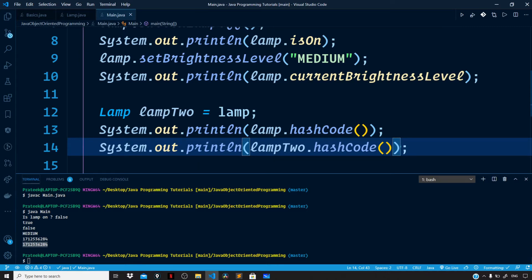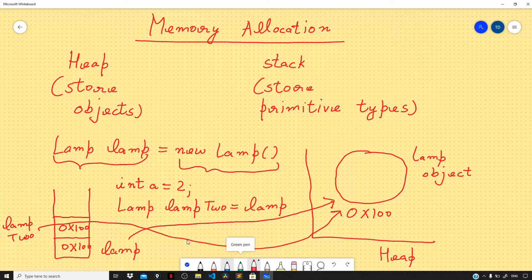Let's run the program to see the output. You can see the hash code for both the references match each other because they point to the exact same object on the heap. So in essence, here we don't have two objects on the heap.